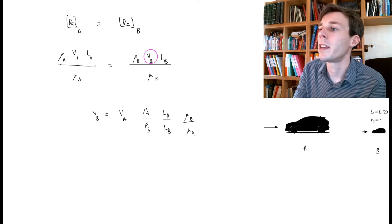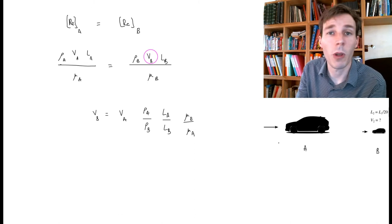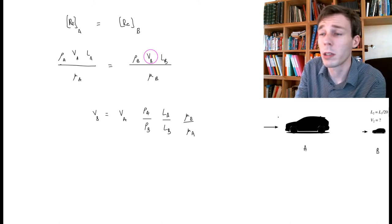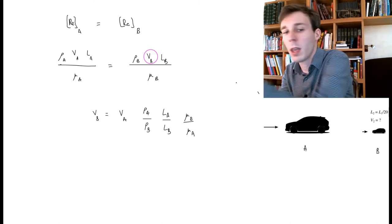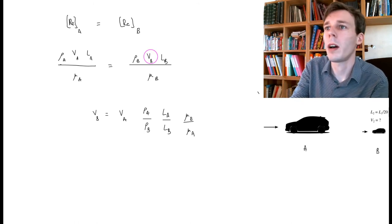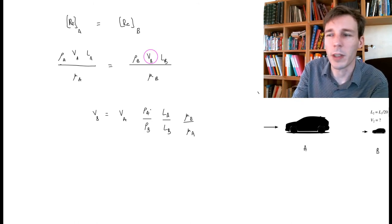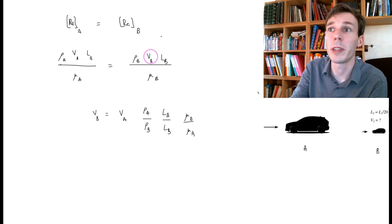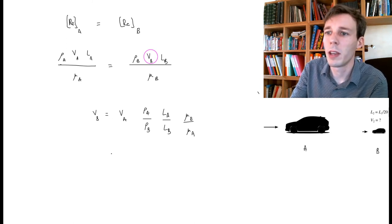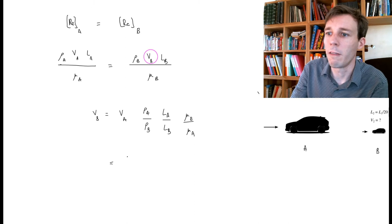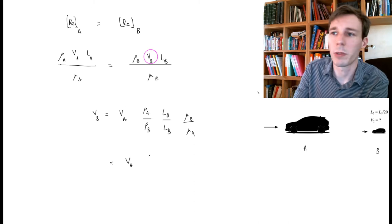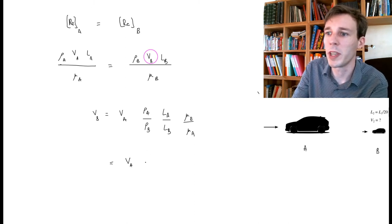In this case, we are having the same air flow over both cars, the real one and the model one. And so the density of the air and the viscosity of the air will be the same, and so we can simply replace VA by its original value.